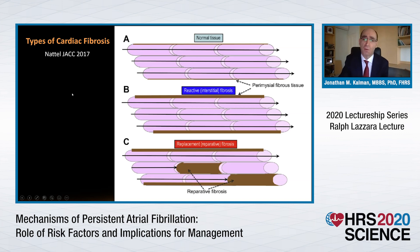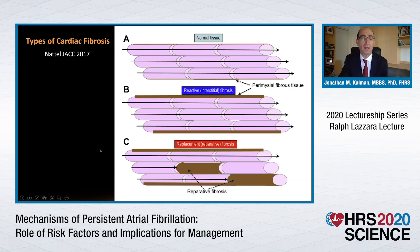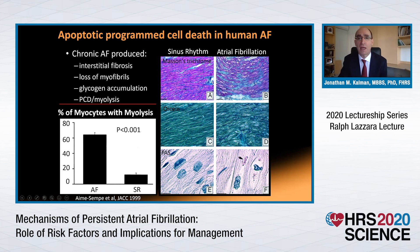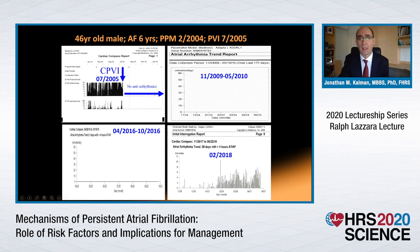If we ask whether cardiac fibrosis can go away, a very nice review from Stan Natel describes different types of fibrosis: reactive or interstitial fibrosis may, under certain circumstances, decrease. Whereas replacement fibrosis — where cell death has occurred and fibrosis is part of the reparative process — is not reversible. Earlier pathology studies comparing atrial fibrillation versus sinus rhythm patients show cell loss, myolysis, programmed cell death, glycogen accumulation, and loss of myofibrils, but also interstitial fibrosis. The relative contribution of interstitial versus replacement fibrosis may determine whether some reversibility can occur.